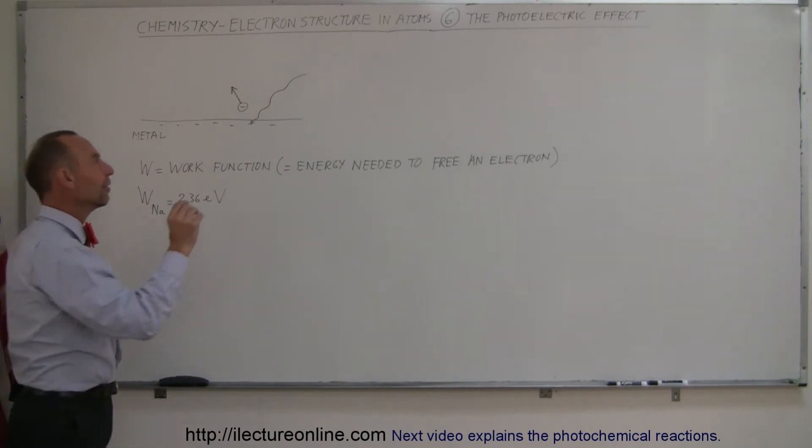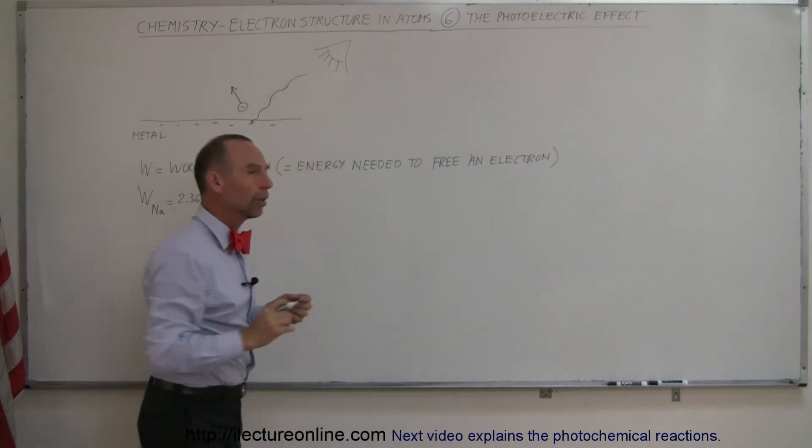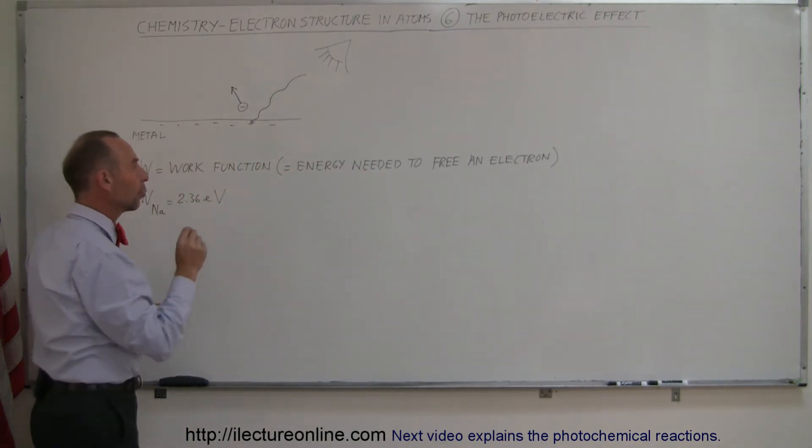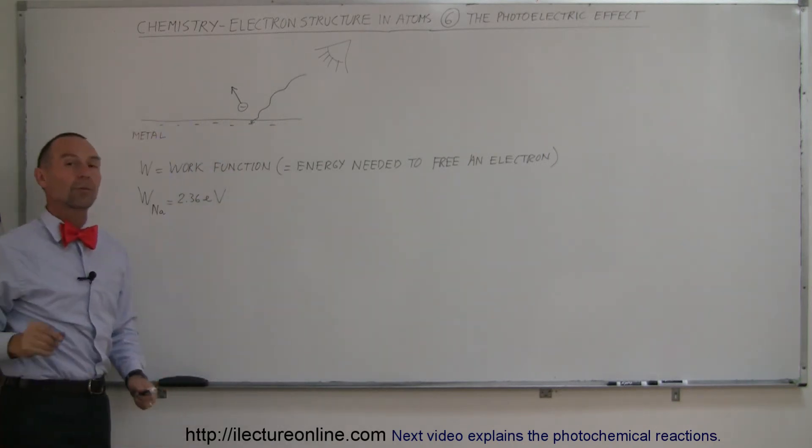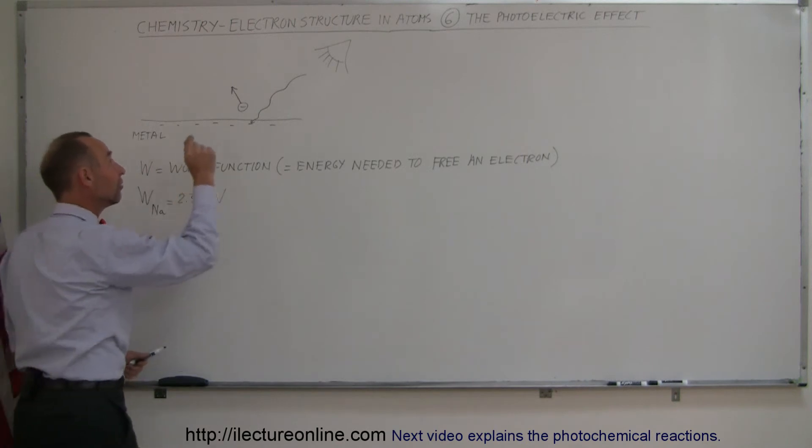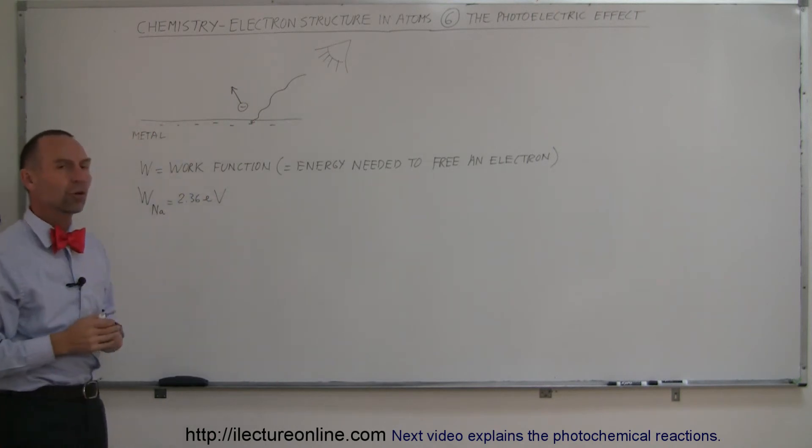But when he had a very small amount of light, a very small amount of light source, shining onto the metal, but of such a color that the wavelength was such that the energy contained within each photon was greater than that, all kinds of electrons were being set free, because every single photon could set free an electron, and that could be measured by the amount of current that would flow away from the sodium metal.